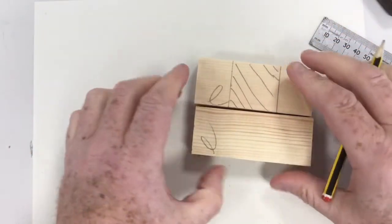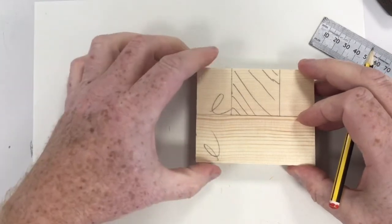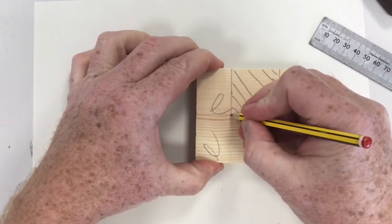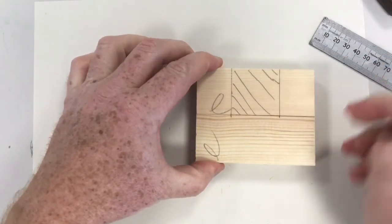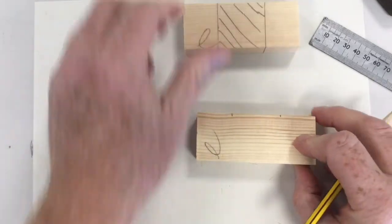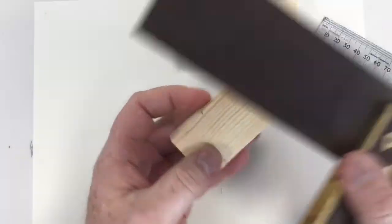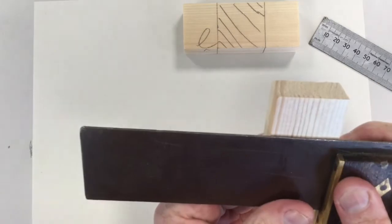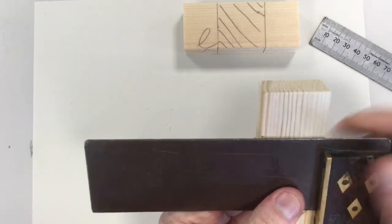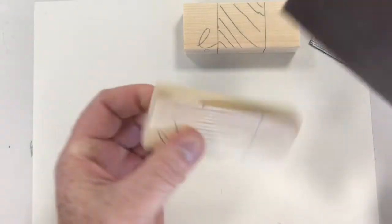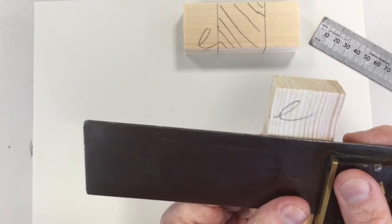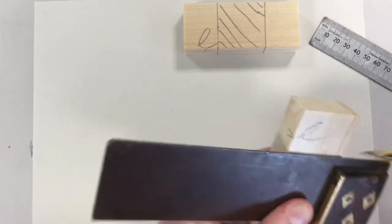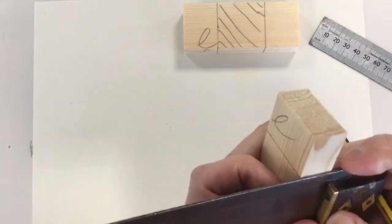Now piece number two is a copy of that. So you can use that as your template and put two marks there, which is going to give you your width. Again, take your tri-square, make sure it's tight, mark your line. Nice crisp line and a nice sharp pencil. And then extend your lines down.